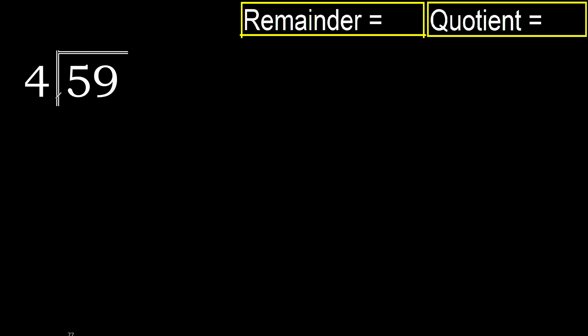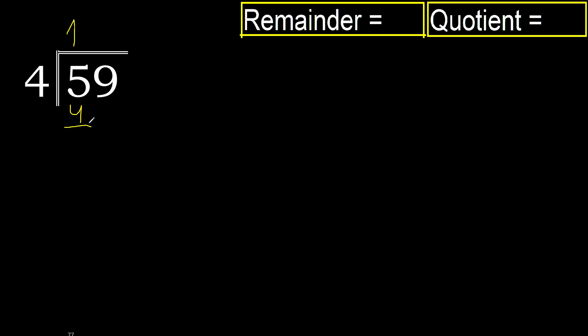59 divided by 4. 5 is not less, therefore with 5: 4 multiplied by which number is nearest to 5 but not greater? 4 multiplied by 2 is 8 — 8 is greater. 4 multiplied by 1 is 4 — 4 is not greater. 5 minus 4 is 1.